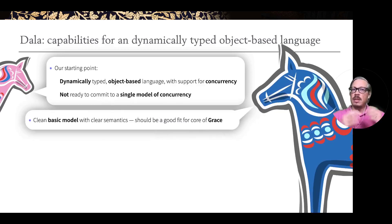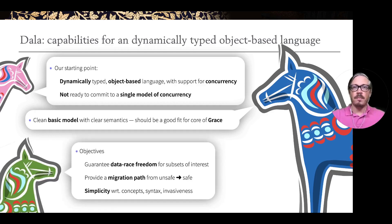We want to have a clean basic model with clear semantics and something that's a good fit for the core of the grace language that James and others have been working on for quite some time.